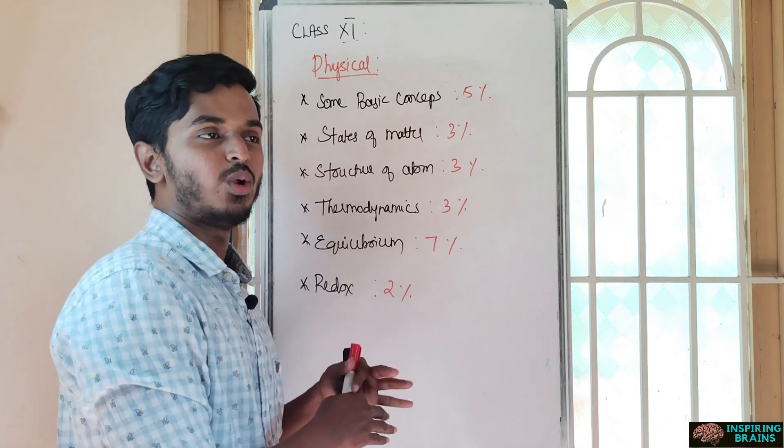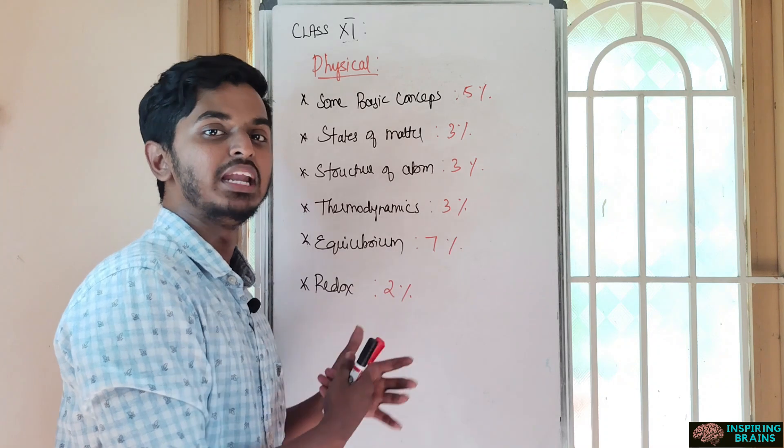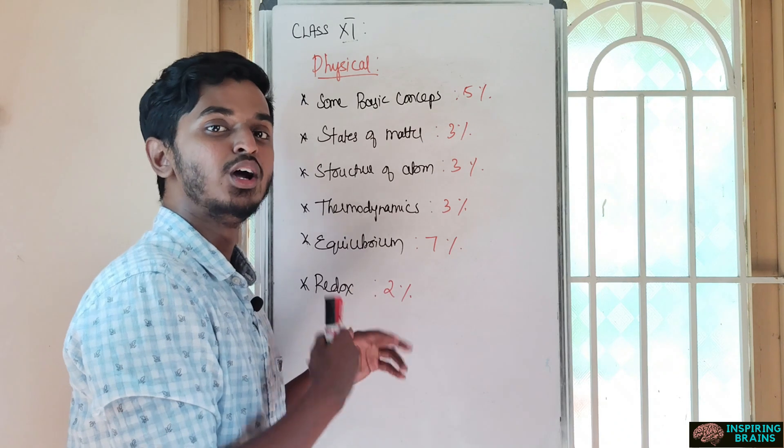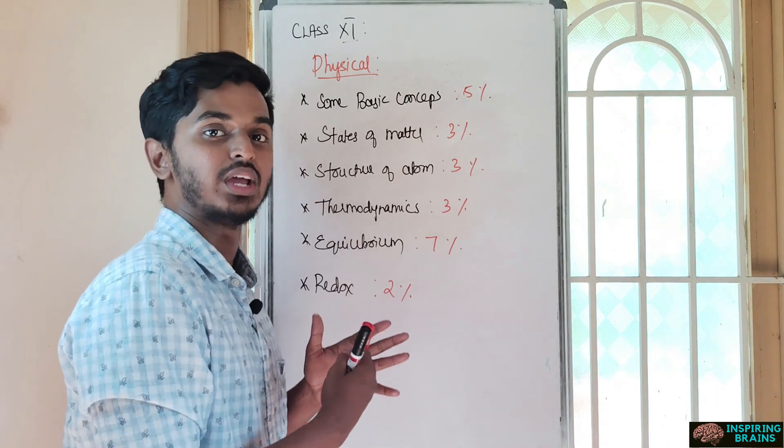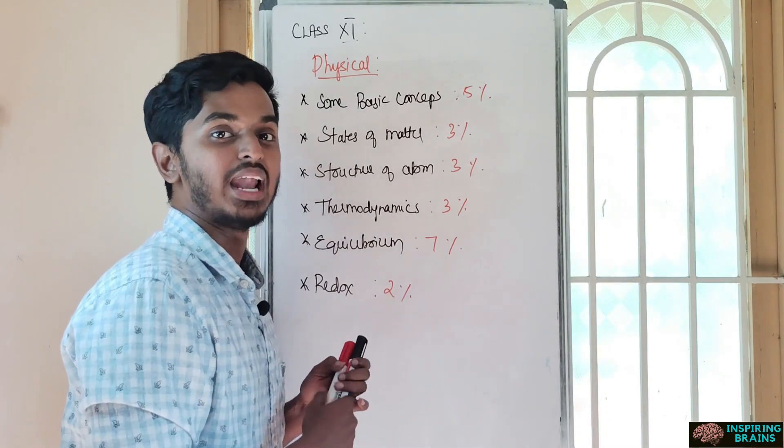Finally, redox. Redox is a preliminary unit. If you know this unit, you can apply in many chapters. Don't leave this redox. It's a small chapter which needs precise application in various chapters to get answers. This is all about the physical chapters of class 11.